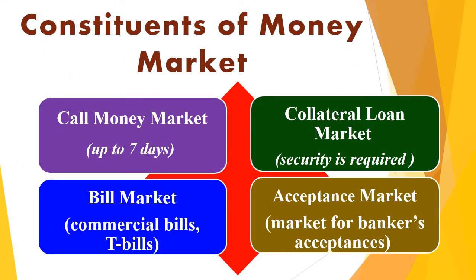Now let's discuss the important constituents of money market. The first is the call money market, which deals in very short-term or call loans. Bill brokers, dealers and stock exchanges generally borrow money at call from commercial banks. These loans are granted for a very short period, up to seven days, but the borrower must repay the loans immediately whenever the banks call them back. No collateral securities are required in these loans.